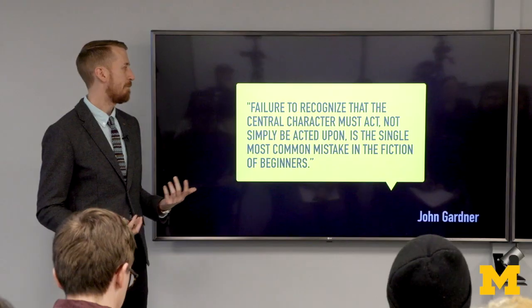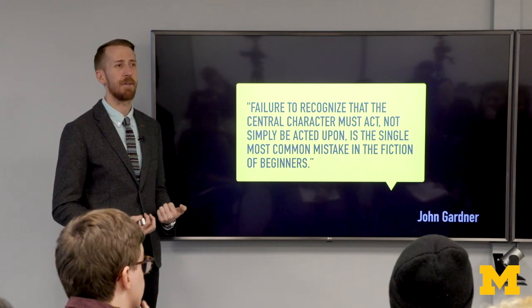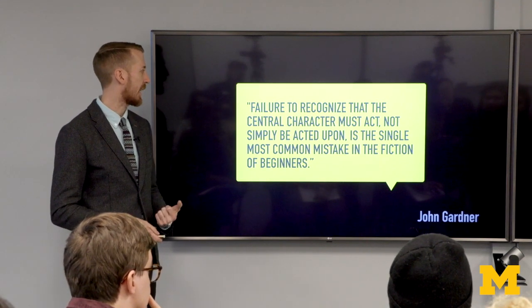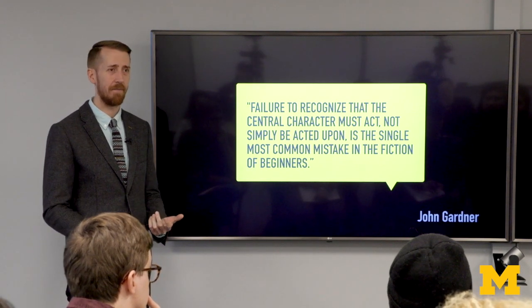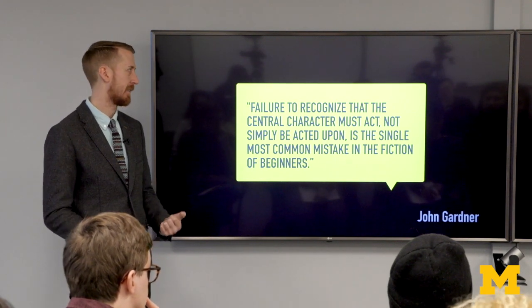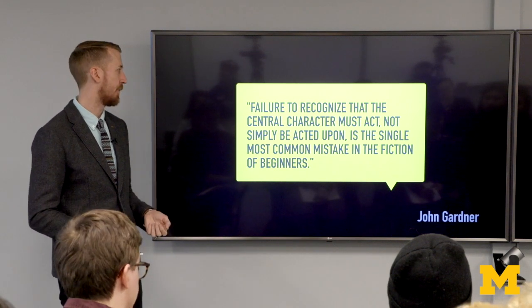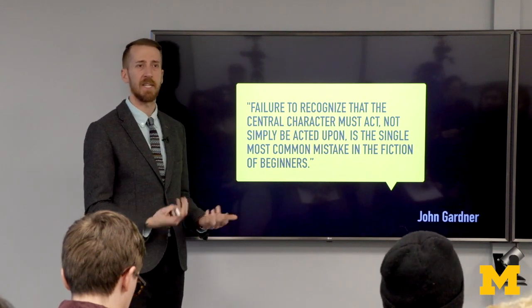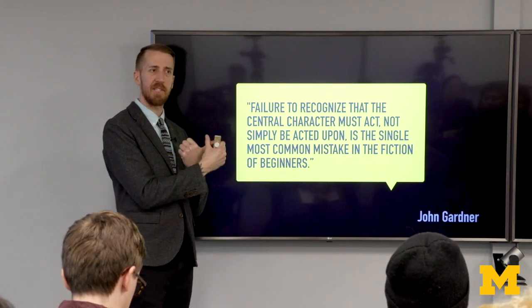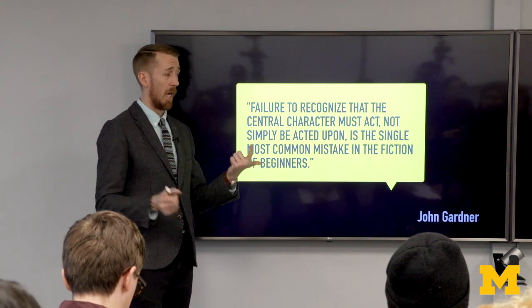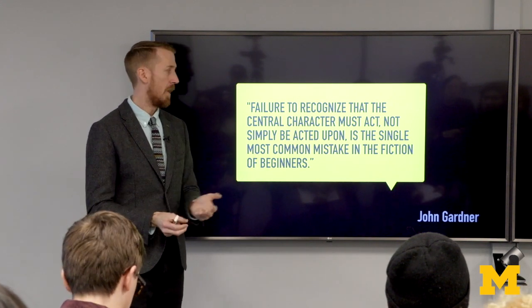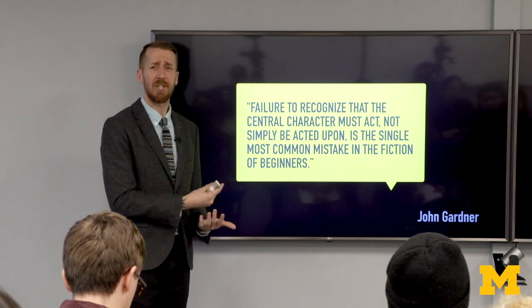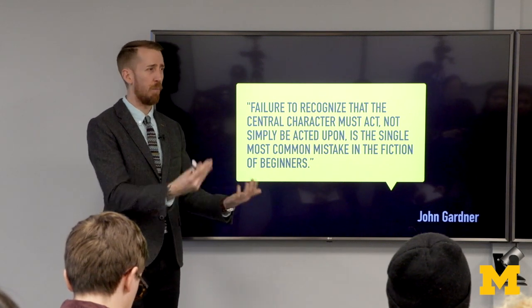John Gardner is somebody who's written a lot about fiction and who I probably respect more than any other about fiction techniques. When he's talking about character, he has this great reminder: the failure to recognize that your central character has to act, has to do things, not simply be acted upon by other forces, is the single most common mistake people make in the beginning of fiction or really any storytelling. You have to have action in your story — it's what propels you forward. Even better if you can put people in their element.